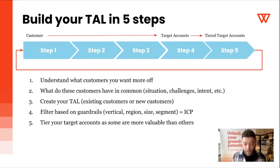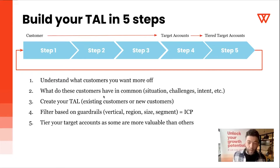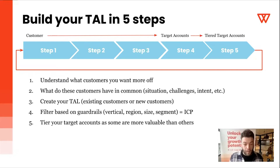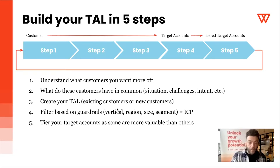Step five: tier your accounts. Identify which are strategic target accounts and which are more valuable. Then the arrow goes back to step one — because it's not set and forget. It's an ongoing process. As you engage with target accounts, you keep learning, identifying new situations and challenges, and continuously updating your target account list. Following these five steps means you'll have a high quality account list.